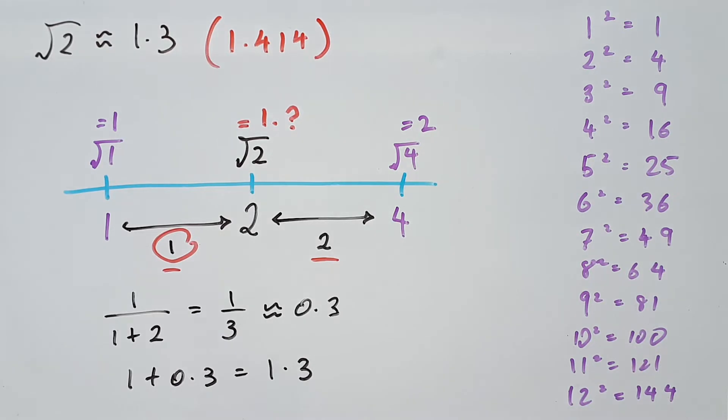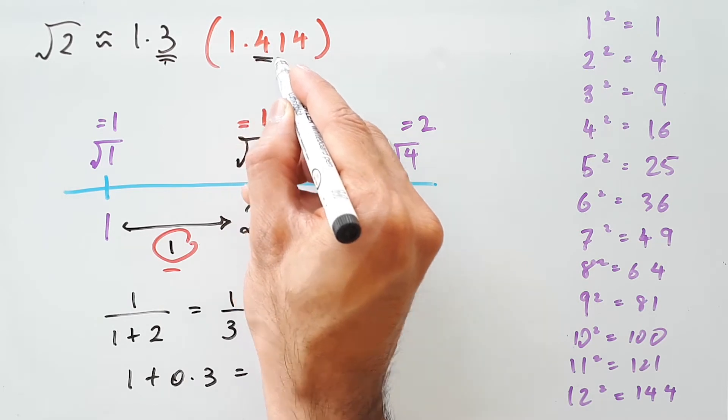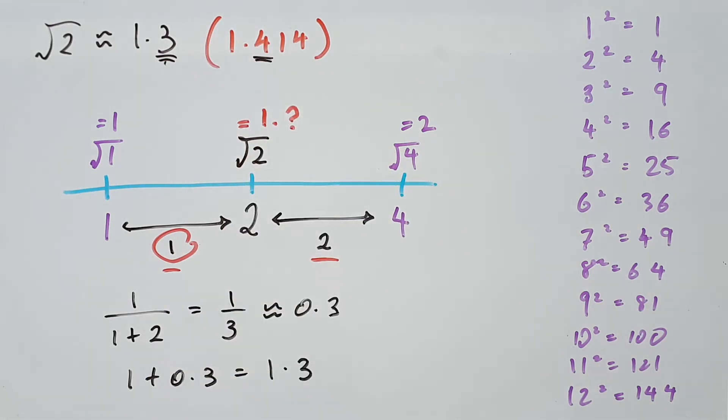The precise value for square root 2 is 1.414, meaning our estimate was only off by 0.1 units. And you'll find this to be a recurring thing in our method, even for larger square roots.